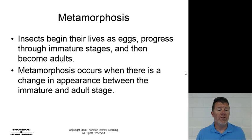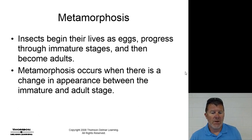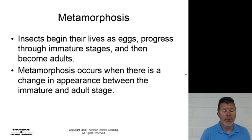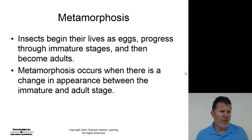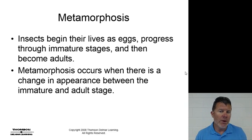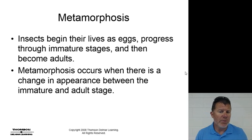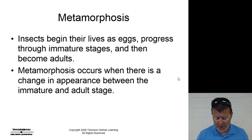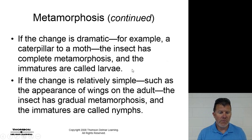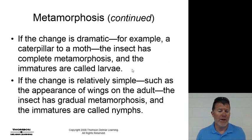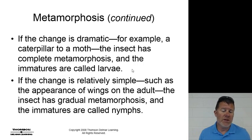Metamorphosis: insects begin their lives as eggs, progress through immature stages, and then become adults. It's a change in appearance from immature to adult stage. This is likely a review for most of you taking Insects and Disease this summer. If the change is dramatic, it's called complete metamorphosis and the babies are called larvae. If it's a simple change — such as the insect getting wings — it's gradual metamorphosis, and we call the babies nymphs.